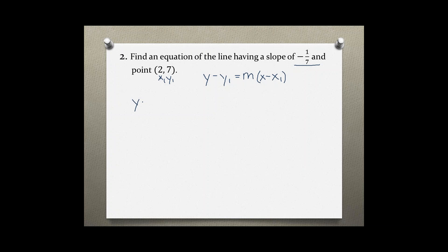Plugging this into our point-slope form, we get y minus 7 equals negative 1 over 7 times (x minus 2). Now solving for y, we distribute negative 1 over 7 to what's inside the parentheses.